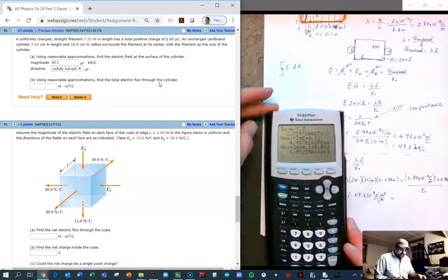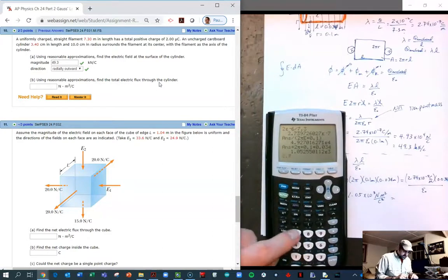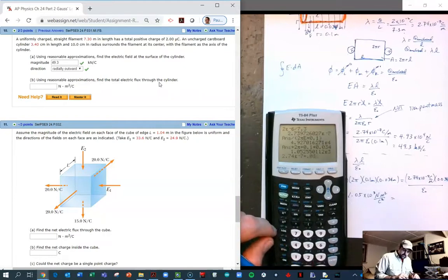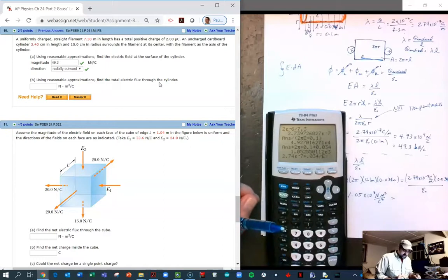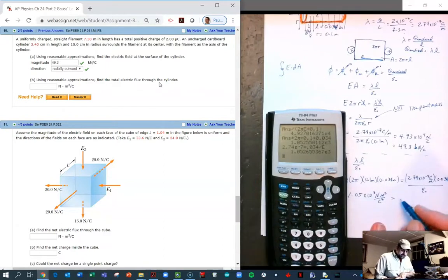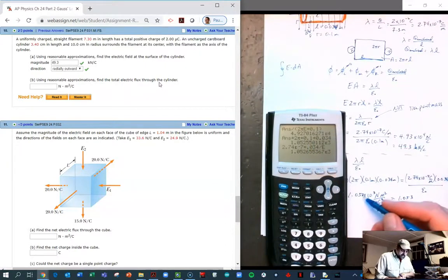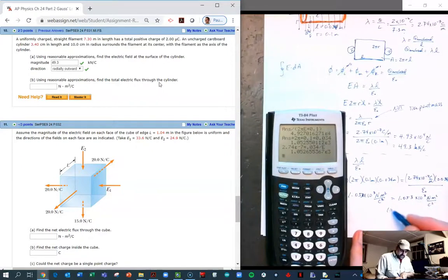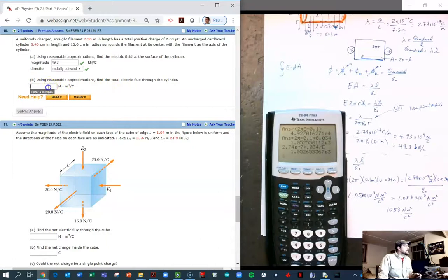Let's see what happens when we do this here: 2.74e-7 times 0.034 divided by epsilon naught. 1.053 I'll put a 3 in there just to brag a little bit—times 10^3, same units. And this of course is 1053. So let's see if that's right here.